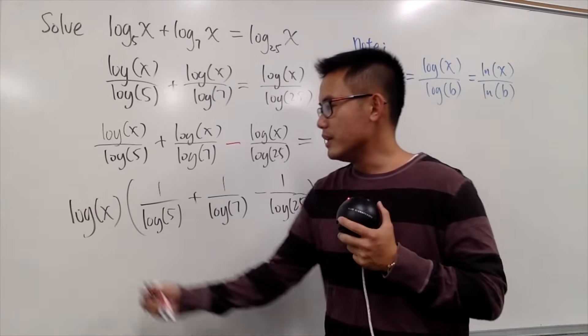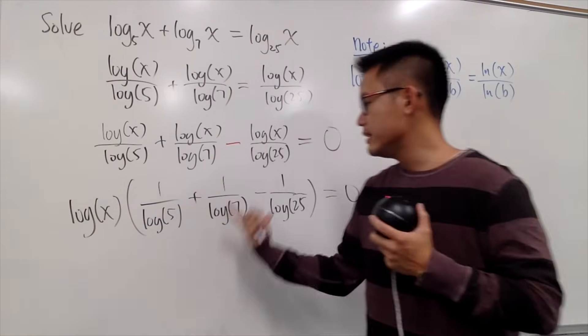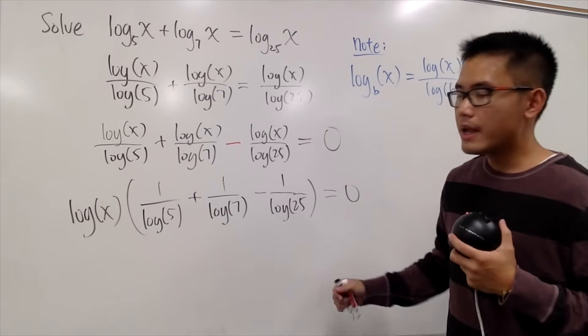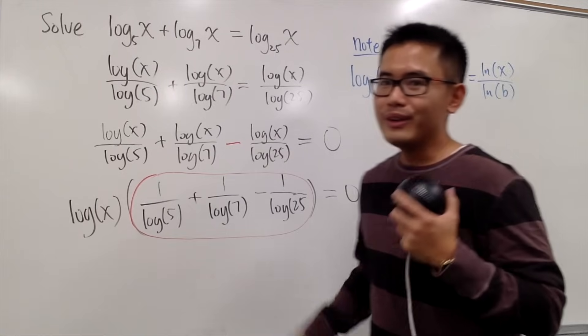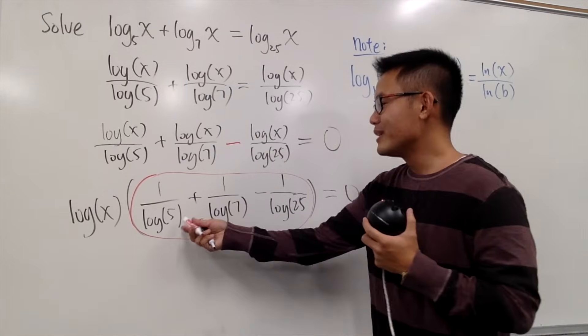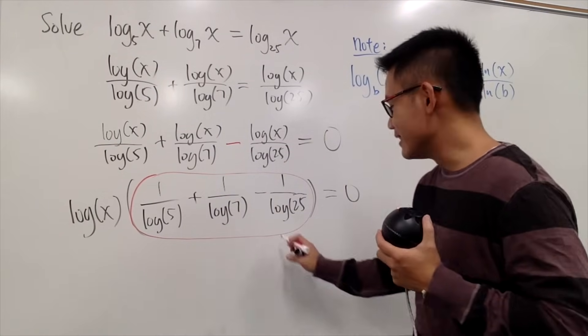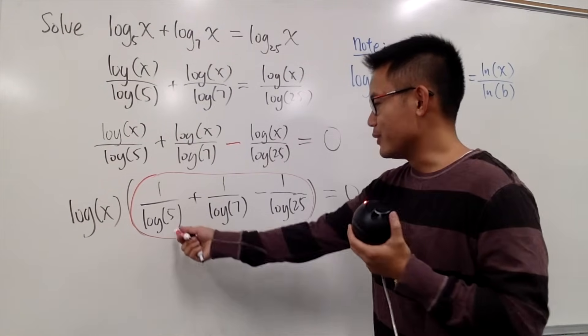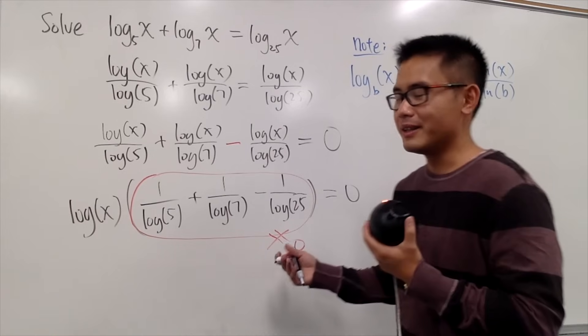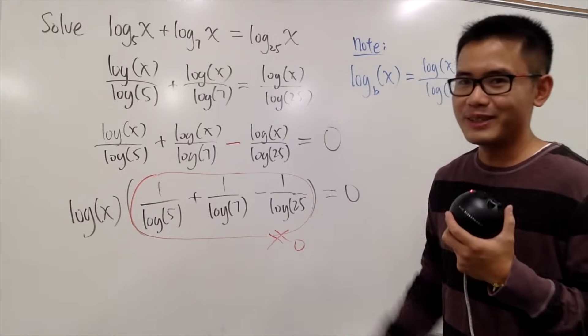Well, as you can see, we have log of x times this, it's equal to 0. So, what is this? Well, you can try if you may, but no matter what you do right here, this is not 0. You can get a common denominator if you would like, and no matter what you do, this is not equal to 0.